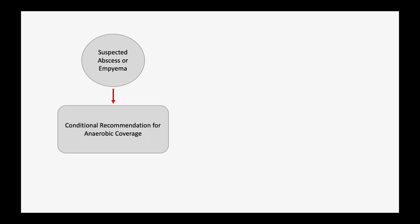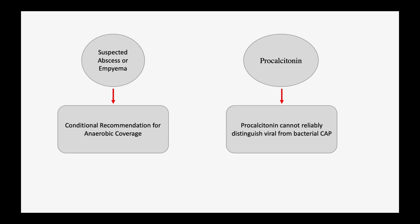Another condition mentioned in the guidelines is if the physician suspects abscess or empyema. If the patient has recurrent aspiration and imaging reveals abscess or empyema, anaerobic coverage can be added — this was a conditional recommendation. The guidelines also addressed whether procalcitonin can be used to distinguish viral from bacterial infection, and the answer is no. Clinical judgment combined with radiological findings, patient history, and exam should guide the decision to treat with antibiotics.